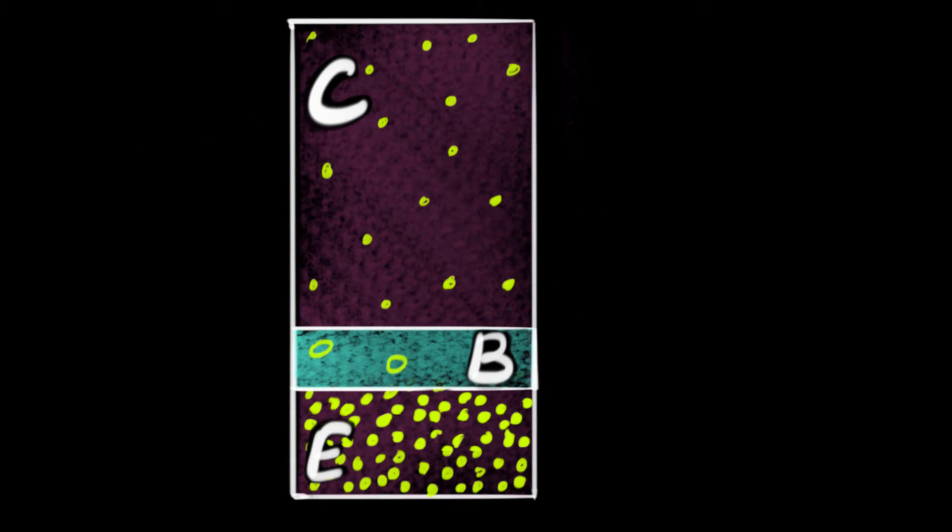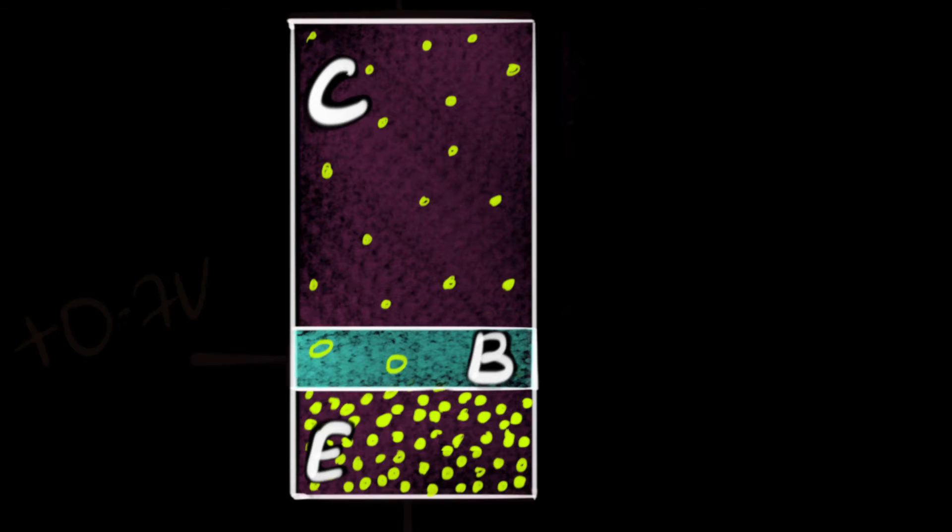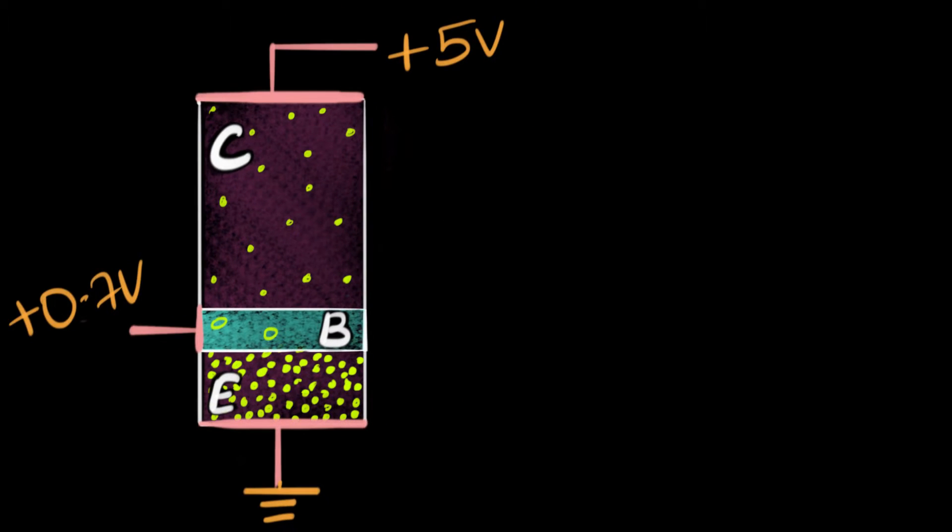And we've also seen, in order to make it work as an amplifier, the connections that we do. We usually connect the emitter to the ground. Then we supply a positive over here, forward biasing this junction. And as a result, let's quickly recap what happens.